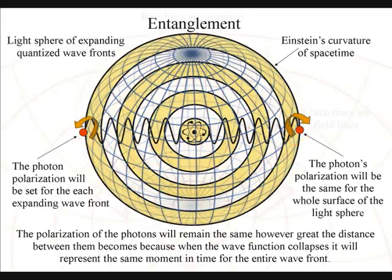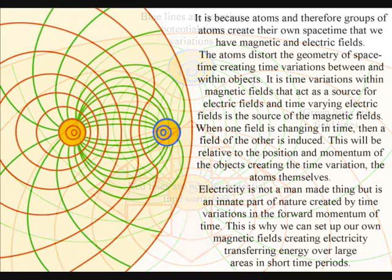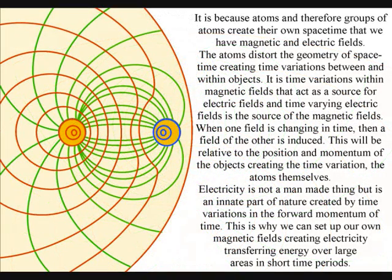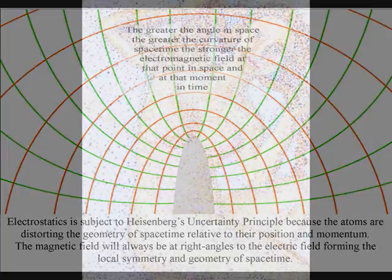In this theory, it is because the atoms can distort the geometry of space-time that we have electromagnetic fields. It is time variations within magnetic fields that act as a source for electric fields, and time-varying electric fields is the source of the magnetic fields. When one field is changing in time, then a field of the other is induced. This will be relative to the position and momentum of the objects creating the time variation, the atoms themselves.